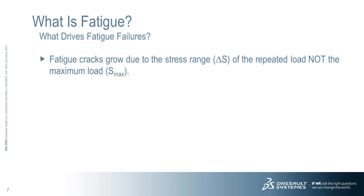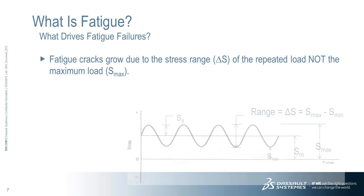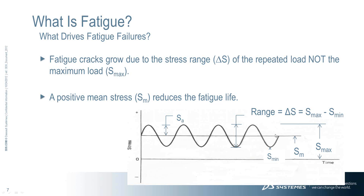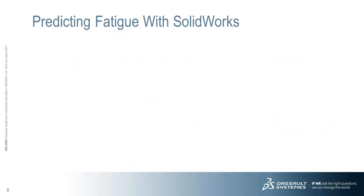What drives fatigue? Fatigue cracks grow due to the stress range of the repeated load, not the maximum load. The stress range is the maximum stress minus the minimum stress. We also have the mean stress — the line around which the stress range occurs. A positive mean stress holds the crack open throughout the whole stress cycle, causing damage continuously. A negative mean stress holds the crack closed through part of the load cycle, which minimizes fatigue crack growth.